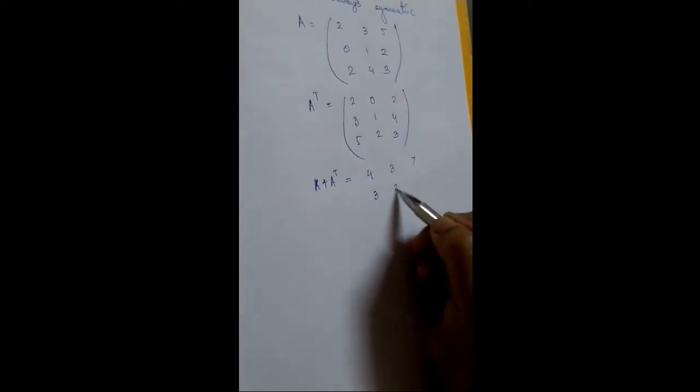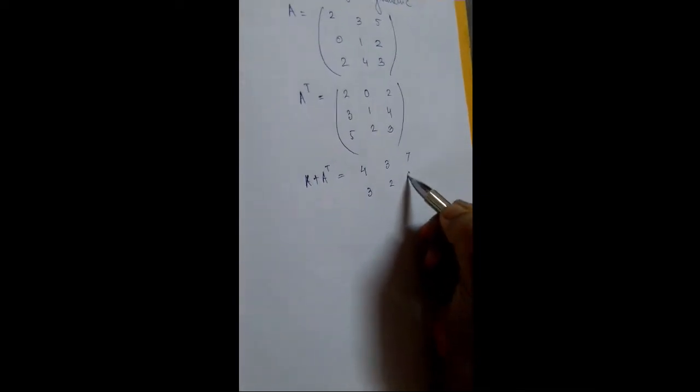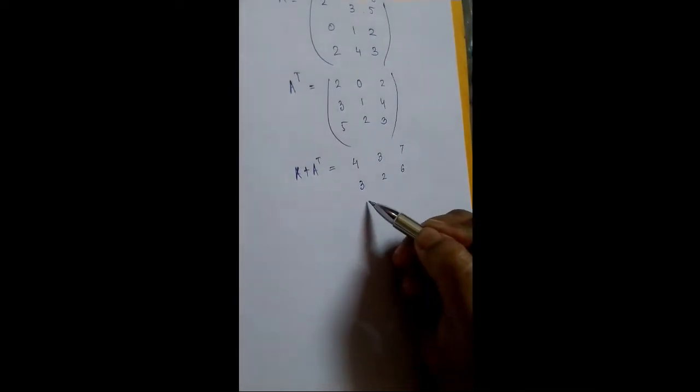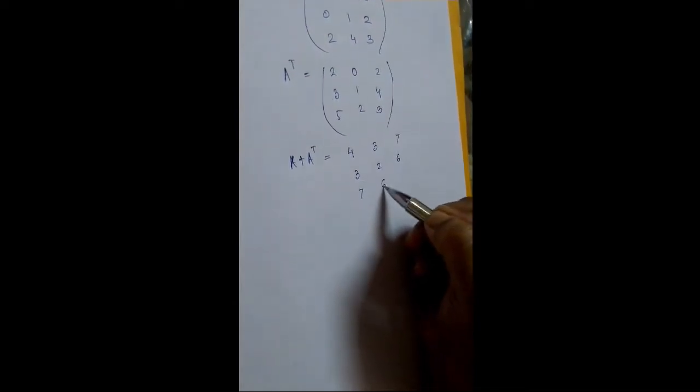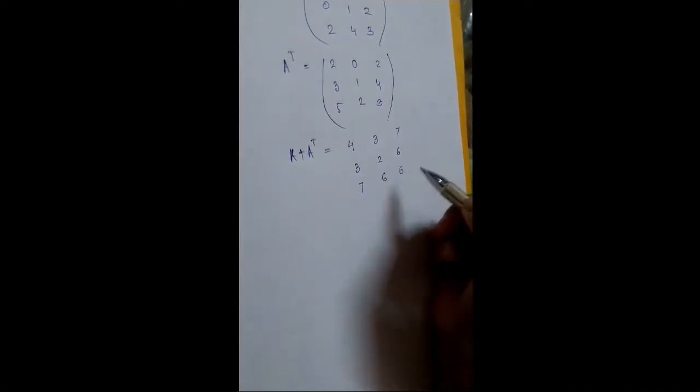So the elements of A plus A transposed are: 4, 3, 7; 3, 2, 6; 7, 6, 6.